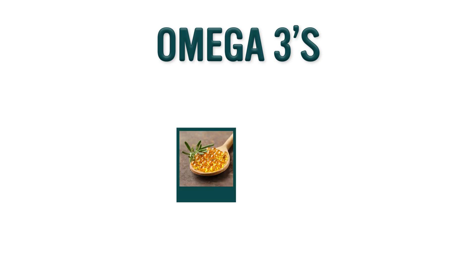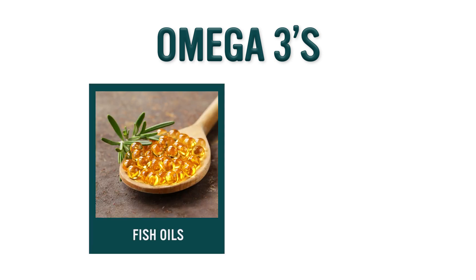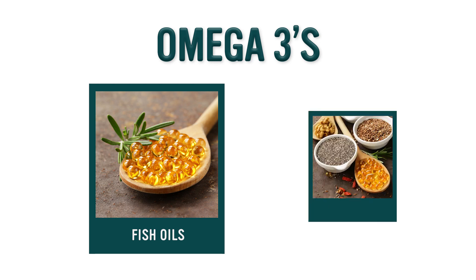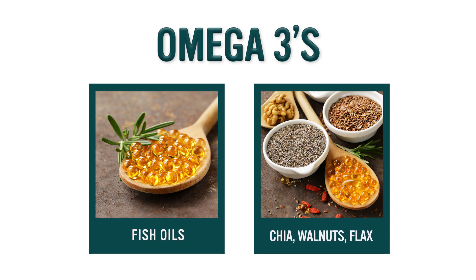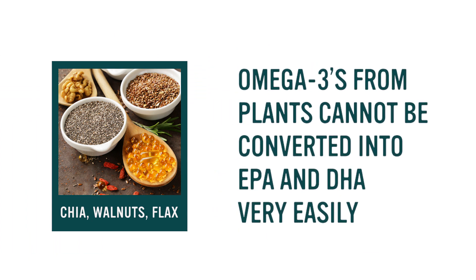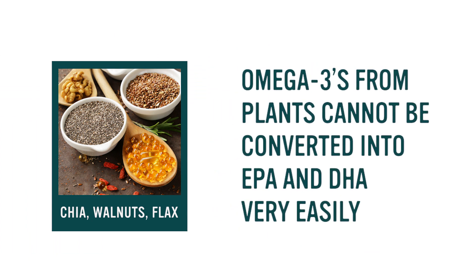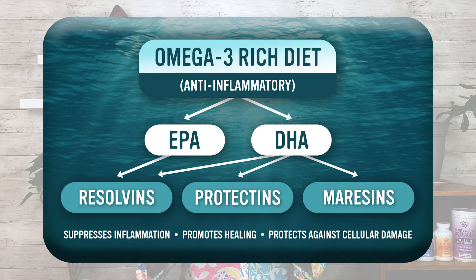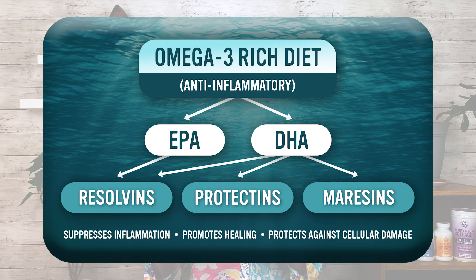The omega-3s we commonly think of as the fish oils, and in fact some of the most important omega-3s are the fish oils. However, omega-3s are also available in certain plants like chia, walnuts, and flax. It's good to note that those omega-3s from plants cannot be converted into EPA and DHA very easily. EPA and DHA are the essential fats from fish, and that's actually the product that we most likely need to consume.